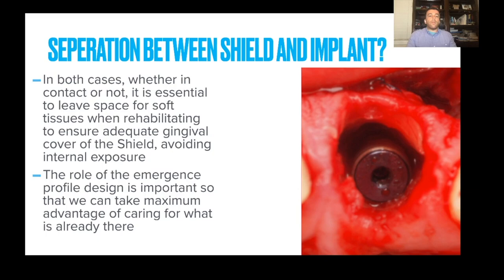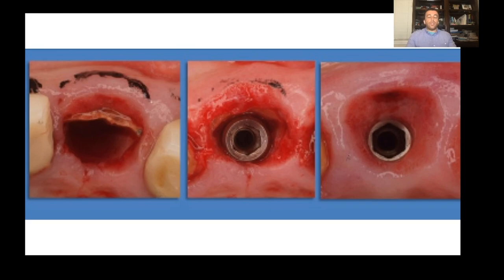Regarding separation between the shield and the implant — whether you have contact or not — it's important to leave enough space for soft tissue when rehabilitating the area, ensuring adequate gingival coverage of the shield and avoiding internal exposures. This relates to the implant emergence profile: take maximum advantage of it by having the implant at an appropriate level and designing the case so there is no compression against the shield.